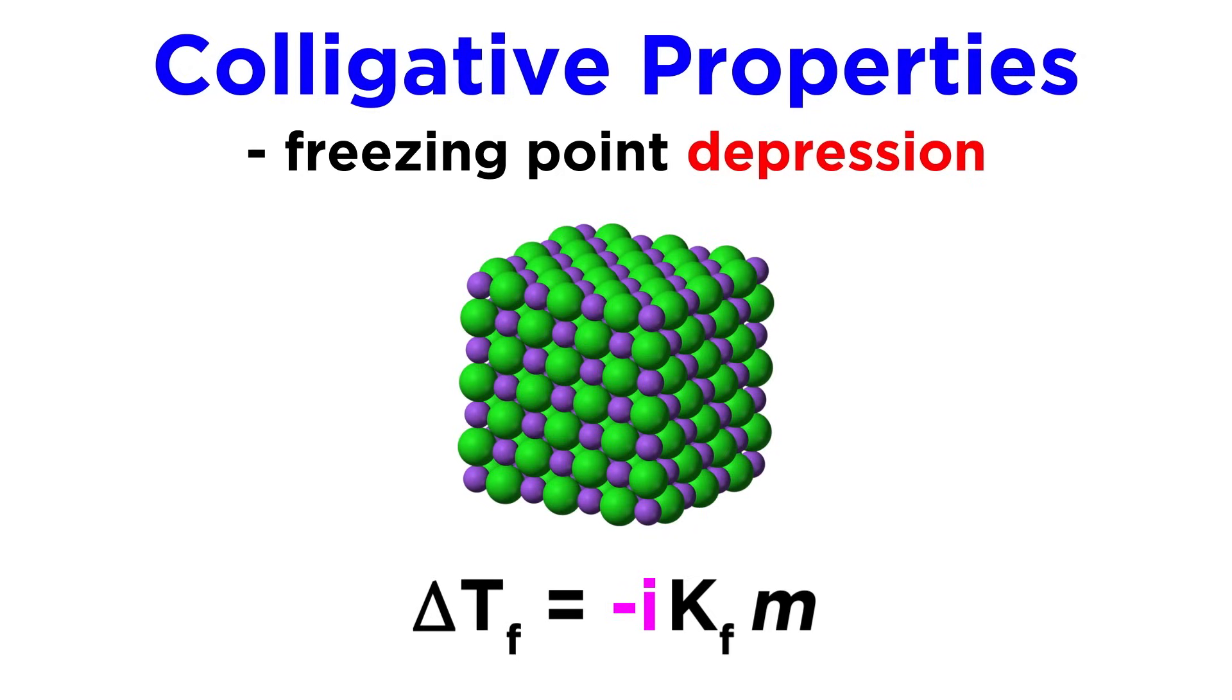This is because a greater concentration of solute will depress the freezing point lower and lower. So if an ionic solid is specified as the solute and the formula unit is given, we must find the number of ions in the formula unit, which will be the Van't Hoff factor, and plug that into the equation to get the correct answer.